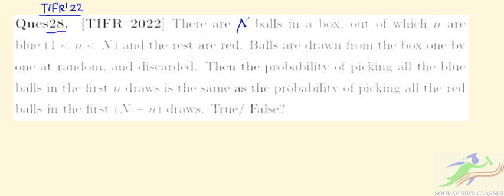There are capital N balls in a box, out of which small n are blue, where 1 < n < N, and the rest are red. Balls are drawn from the box one by one at random and discarded. The question asks: is the probability of picking all the blue balls in the first n draws the same as the probability of picking all the red balls in the first capital N minus n draws? Is this true or false?